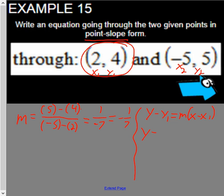So my y1 is 4. My m is negative 1 over 7 times x minus x1, which is 2.